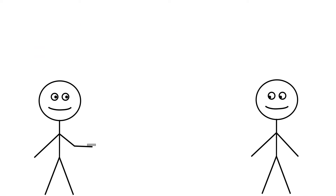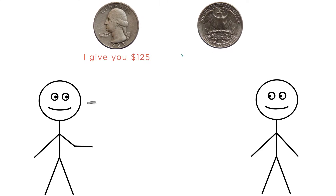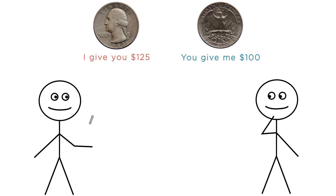Let's say I offered you the following bet. I'm going to flip a coin. If it comes up heads, I'll give you $125. If it comes up tails, you give me $100. Would you take this bet? For now, don't think too much about the math — just go with your first instinct. Heads you win $125, tails you lose $100. Would you do it?